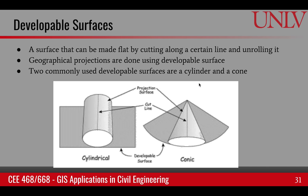Geographic projection is done through what we call developable surfaces. A surface that can be made flat by cutting along a certain line and unrolling it is called a developable surface. There are two commonly used developable surfaces: a cylinder and a cone. If we take the cylinder, cut along a dotted line and unfold it, it becomes a flat surface. Similarly, if we take a cone — also called a party hat — cut along a line and unfold it, it also becomes a flat surface. Both of these developable surfaces can be used for geographic projection.